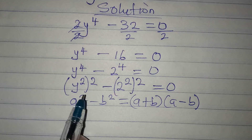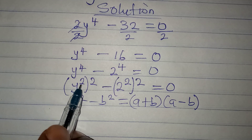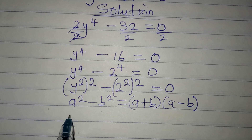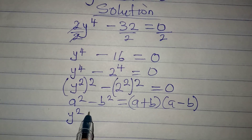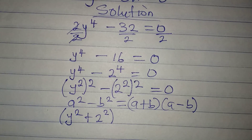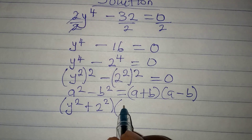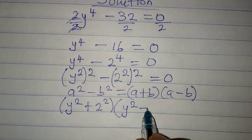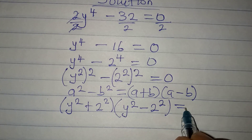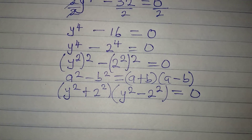I want to apply the same standard here, so that (a + b) will become y squared plus 2 squared in the first bracket, and then in the second bracket we have y squared minus 2 squared, and this will be equal to 0.